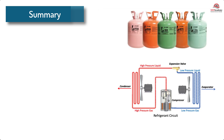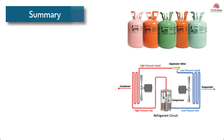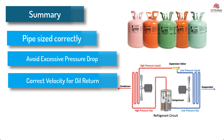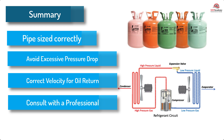Summary. Overall, the design of the refrigerant piping system should be carefully considered to ensure that the system operates efficiently and reliably. A well-designed system will ensure that the suction, liquid, and discharge piping is large enough to prevent excessive pressure drop, yet small enough to ensure that the velocity will carry the oil back to the compressor crankcase. It's recommended to consult with a professional HVAC engineer to ensure proper design and installation.